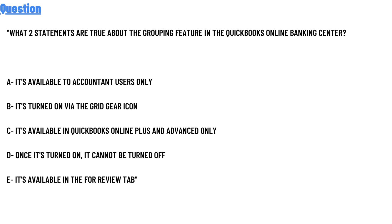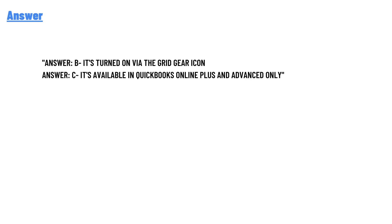Option A: it's available to account users only. Option B: it's turned on via the grid gear icon. Option C: it's available in QuickBooks Online Plus and Advanced only. Option D: once it's turned on it cannot be turned off. Option E: it's available in the four view tabs. The correct answers are Option B — it's turned on via the gear icon — and Option C — it's available in QuickBooks Online Plus and Advanced only.